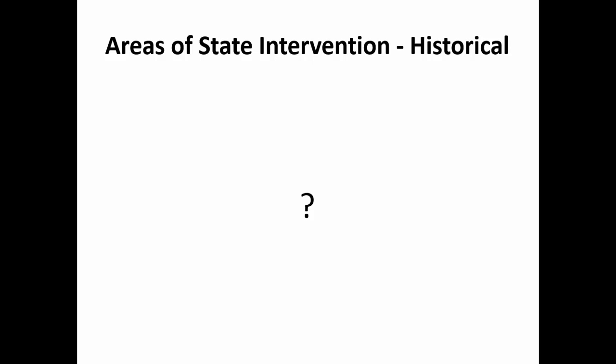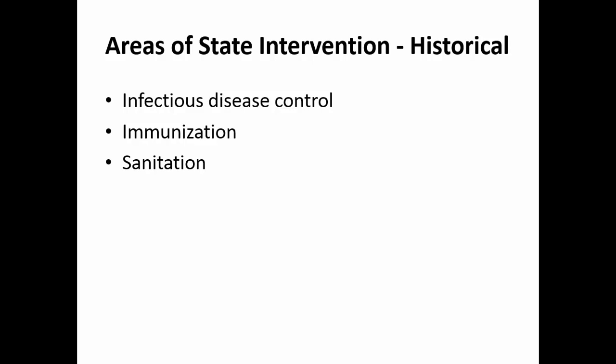Areas of state intervention — historical. I want you to pause for a moment and think about what you would describe as quintessential areas of state intervention historically in matters of public health. My guess is that you thought right away of infectious disease. Historically, the state has played a fundamental role in trying to protect the health of populations against dread diseases. A number of the islands visible in the Halifax harbour served as quarantine and isolation communities for people arriving from overseas on ships who were thought to be carrying infectious disease. The state has also served a major role in immunization of the population against a range of diseases and continues to do so.